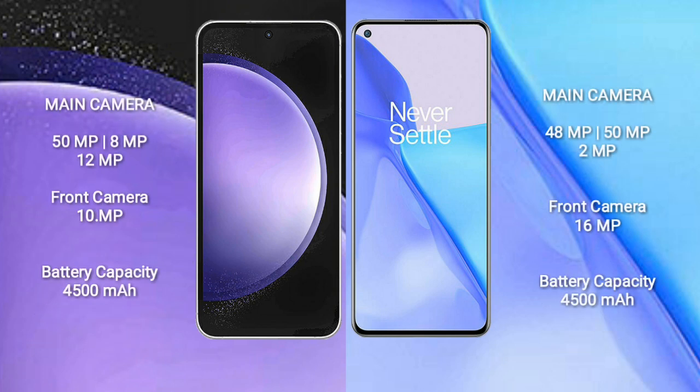Samsung Galaxy S23 FE features a rear triple camera setup: 50MP plus 8MP plus 12MP, and a 10MP front camera. OnePlus 9 features a rear triple camera setup: 48MP plus 15MP plus 2MP, and a 16MP front camera.